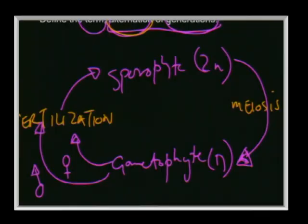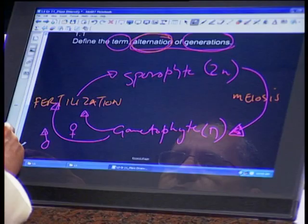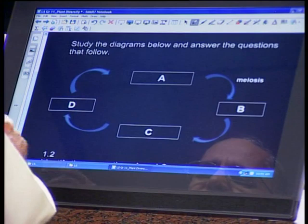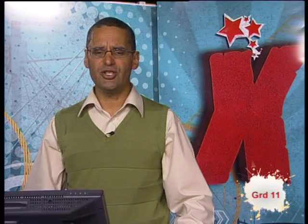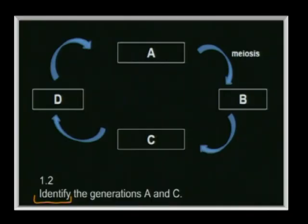Moving to question 1.2 — an important exam and test-writing skill is to underline the verb so you know exactly what to do. The question says 'identify,' and you must identify the generations: generation A and generation C.